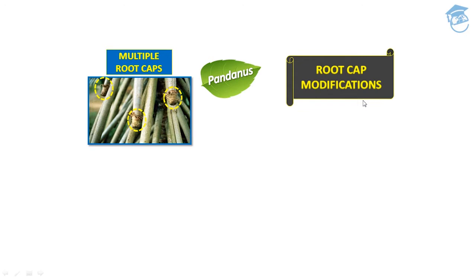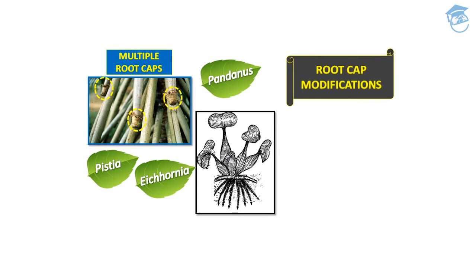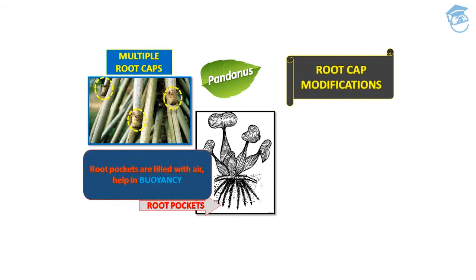Generally only one root cap is present in one root, but in pandanus this modification shows multiple root caps. It is also present in Eichhornia. In Eichhornia, which is an aquatic plant, root pockets are seen instead. Root pockets are filled with air, which helps the plant stay in water by aiding buoyancy. So root cap modifications include multiple root caps in pandanus and root pockets in Eichhornia.